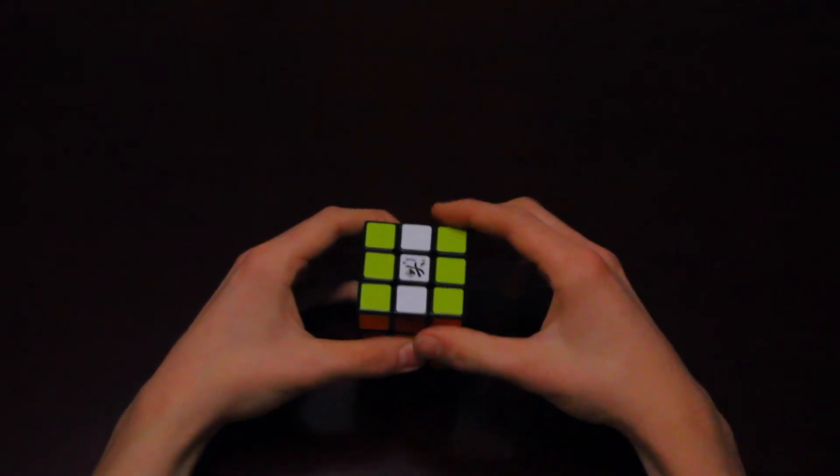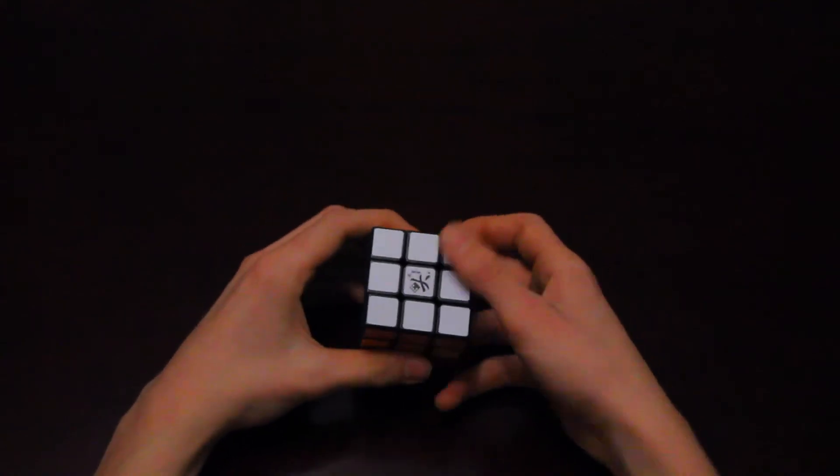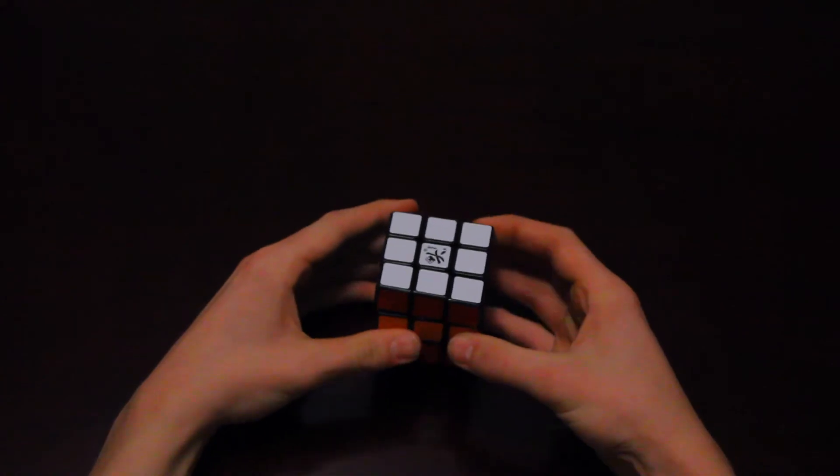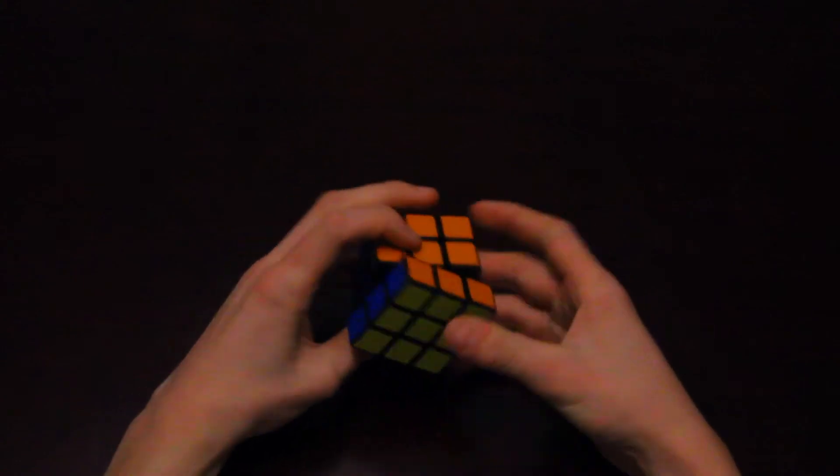And then do the other pairs. So right 180 degrees, and left 180 degrees. Now you should have the top and bottom faces. And then we'll do up 180 degrees, and down 180 degrees.